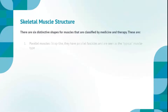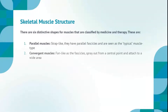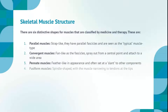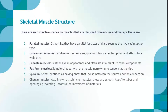There are six distinctive shapes for muscles classified by medicine and therapy. These are: 1. Parallel muscles, strap-like, they have parallel fascicles and are seen as the typical muscle type. 2. Convergent muscles, fan-like, as the fascicles spray out from a central point and attach to a wide area. 3. Pennate muscles, feather-like in appearance and often set at a slant to other components.